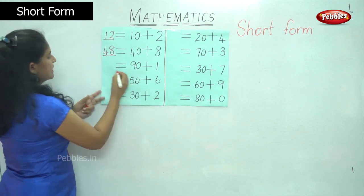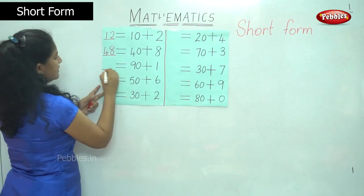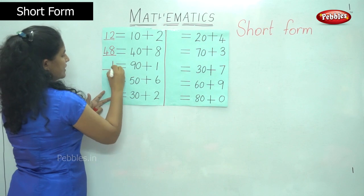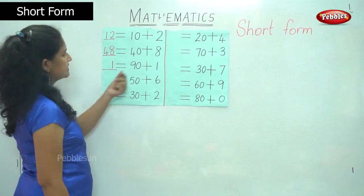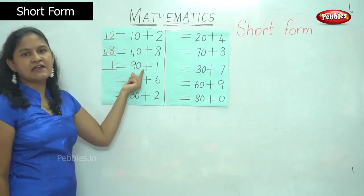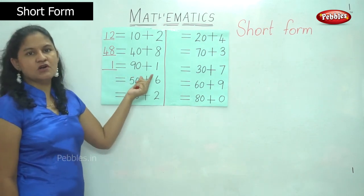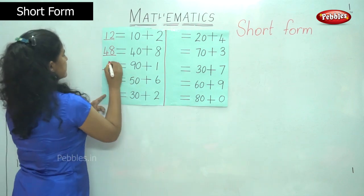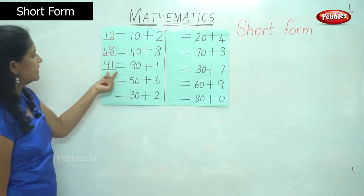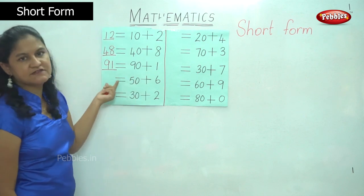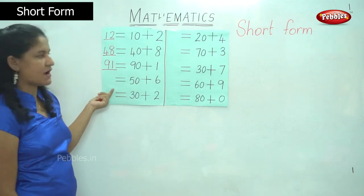The next number: in the ones place I have number 1, and in the tens place I have 90 or 9 tens, which is number 9. So I read it as 9 tens plus 1 one, which gives me 91.